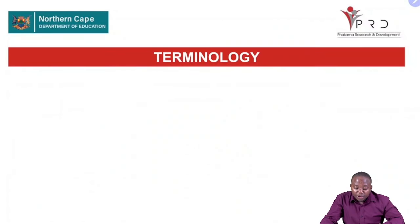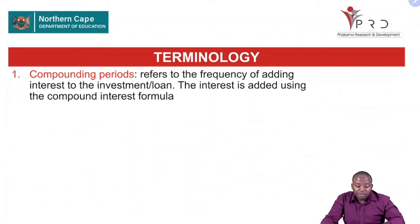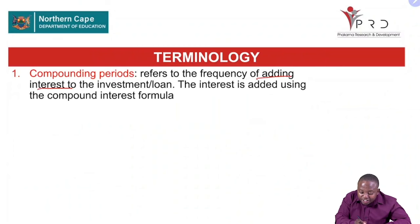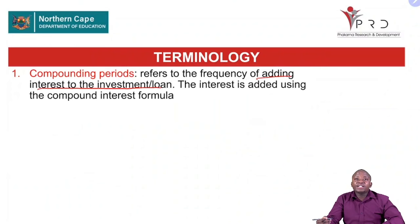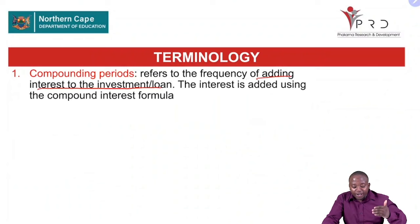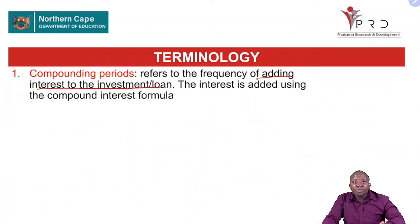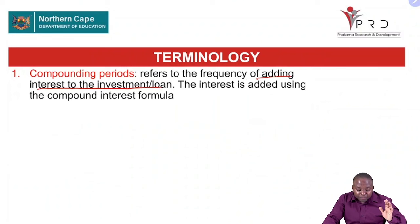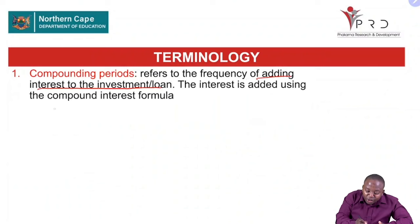Now, today's lesson. We are supposed to revise compounding periods. What are compounding periods? Compounding periods refer to the frequency of adding interest to the loan or investment — how often is the interest added. If you put money in a bank account, the compounding period tells you how often the bank will add interest to that investment, or how often the bank will charge interest on a loan — whether monthly, weekly, or daily.